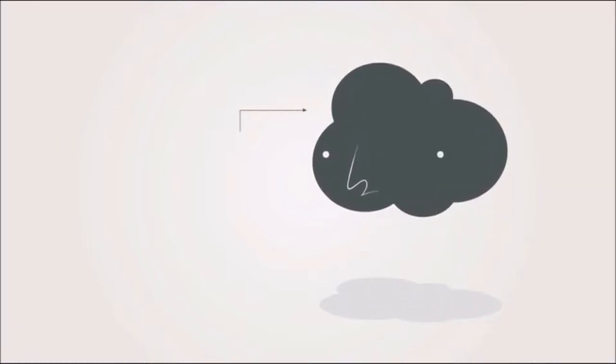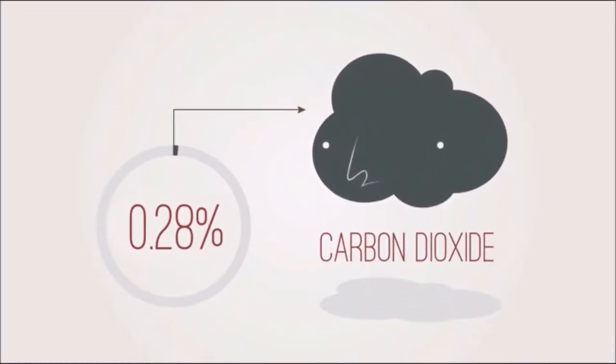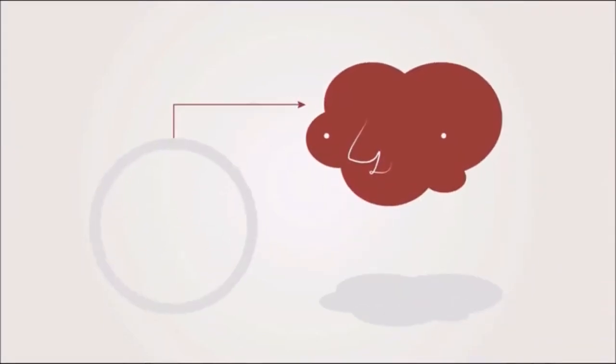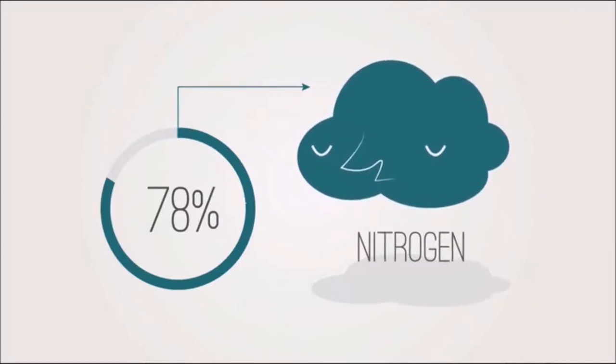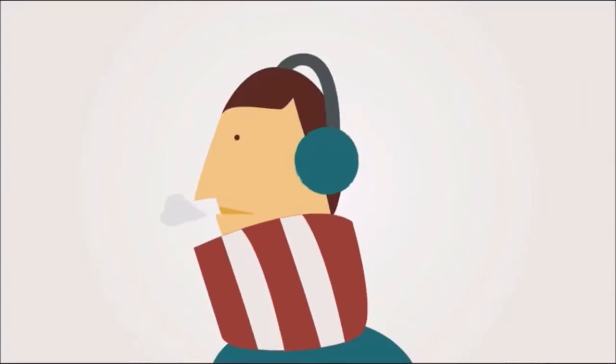Before the world became industrialized by burning fossil fuels, the carbon dioxide concentration in the atmosphere was about 0.028%, tiny compared with oxygen at 21% and nitrogen at 78%, but enough to keep us warm.